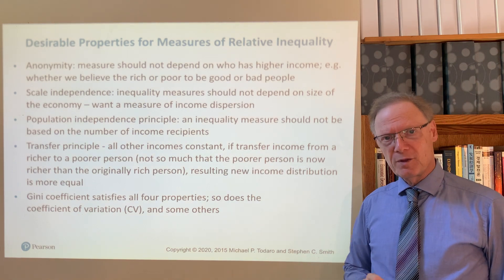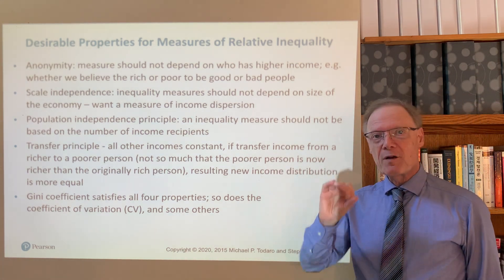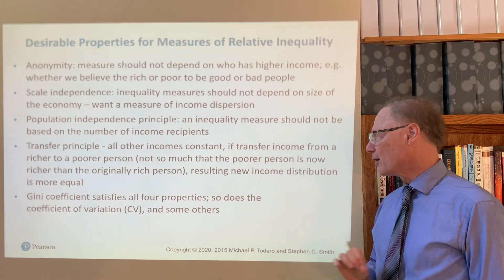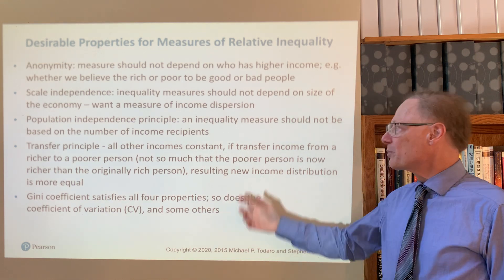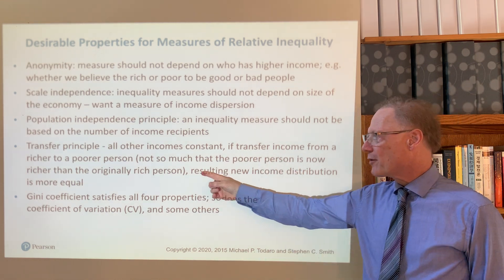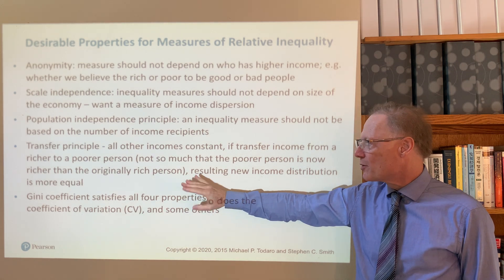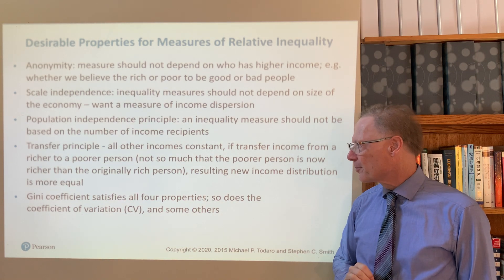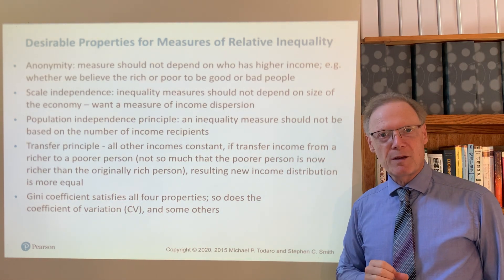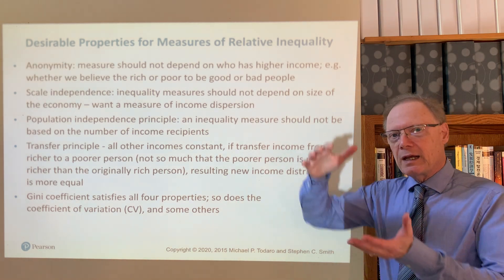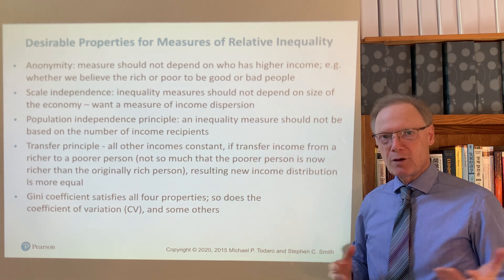We have the transfer principle, which says that all other incomes constant except for two people, if you transfer income from a richer person to a poorer person, the resulting new income distribution is more equal. An important caveat, however, is that there can't be so much transfer that the poorer person is now richer than the originally richer person. This principle, sometimes called the Pagou-Dalton principle, captures the idea that as income dispersion becomes more compressed, inequality should always show a decrease.